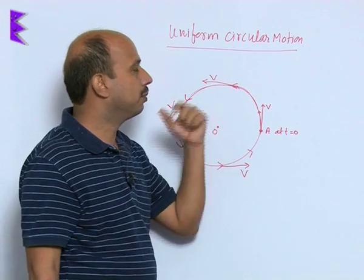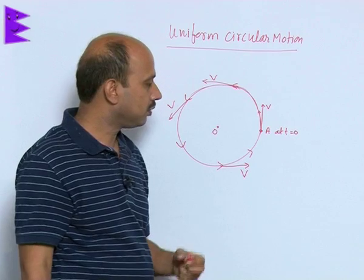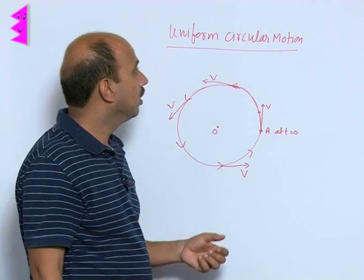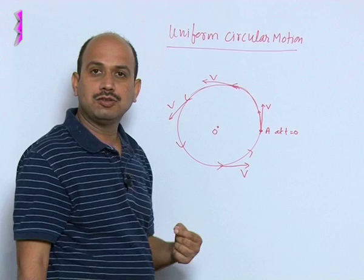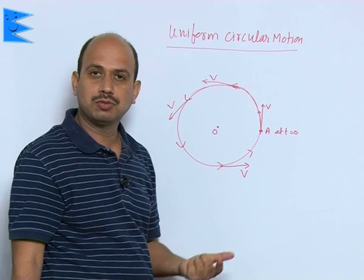So, see here, what is the definition of uniform circular motion? Now, just I will repeat the definition: when the body moves in a circular path with a constant speed, motion is said to be uniform circular motion.